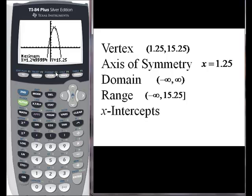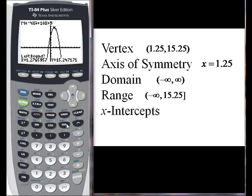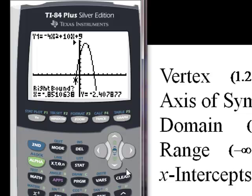Now we need the x intercepts. We can do this with the graphing calculator. We can do second calculate. And our option number two is to find the zeros, which are also the roots. Now, again, it asks for a left and right bound. You can see my cursor there. I need to get to the left of my zero. So I'm going to find this left one first. And I hit enter when I have my left bound. Go over to the right.